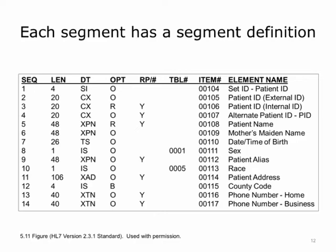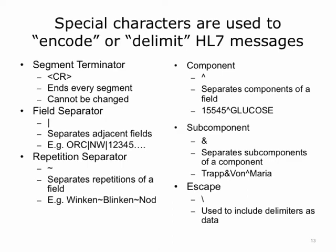Each segment has a segment definition. This is the segment definition for the patient identification segment, or PID. A segment definition includes a sequence number — which is just a logical sequence of the field within the segment — a suggested maximum length for the field, and a data type for the field. The data type can be simple or complex, and if it is complex, it is further broken up into components and subcomponents. Special characters are used to encode or decode HL7 messages: the segment terminator ends every segment, the field separator separates adjacent fields, the repetition separator separates repetitions of a field, the component separator separates components of the field, and the subcomponent separator separates subcomponents of a component.